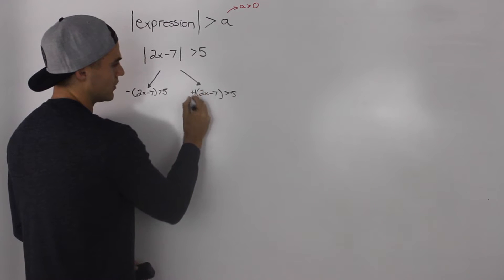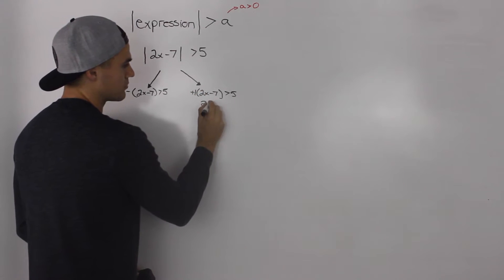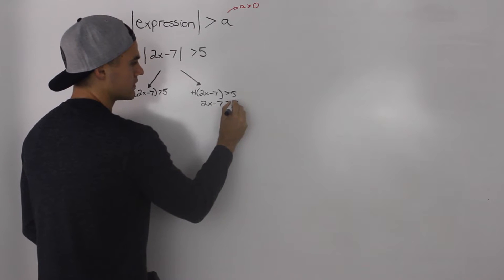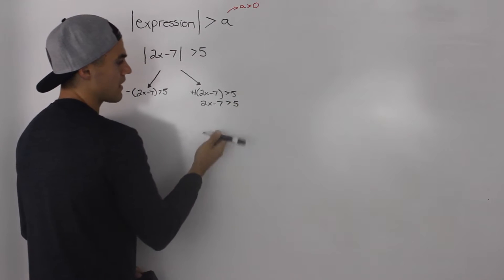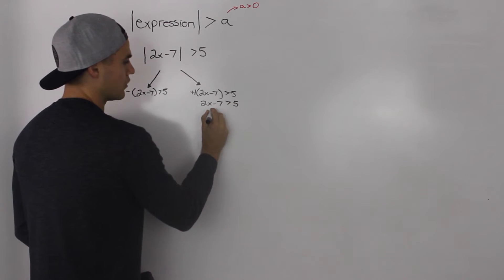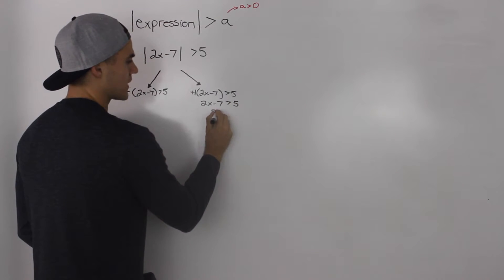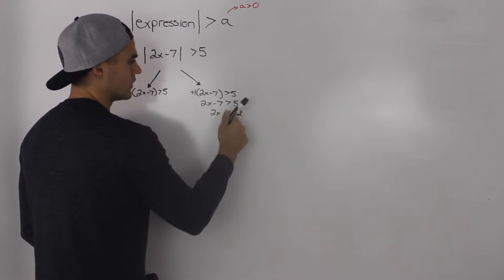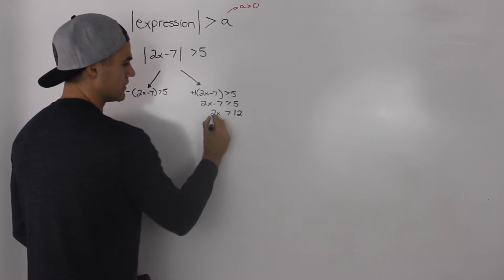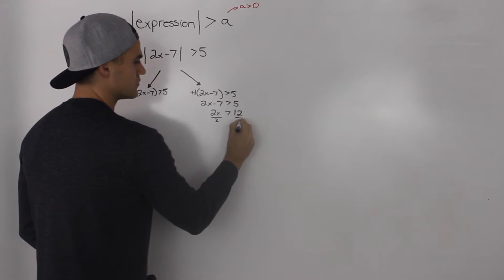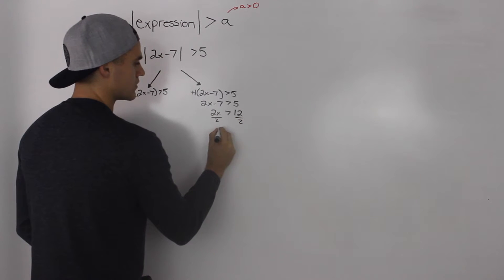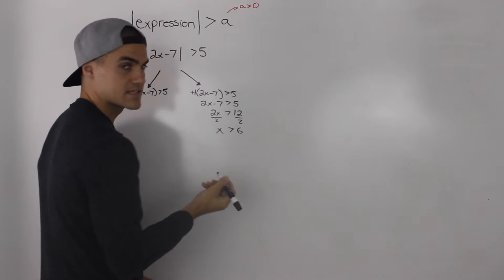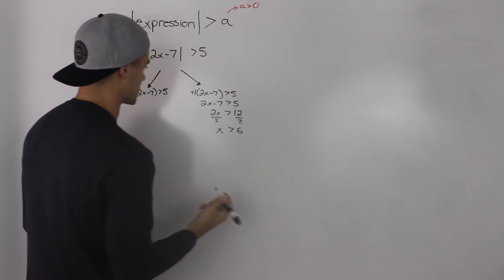For the positive case, everything stays the same: 2x minus 7 is greater than 5. Bring the negative 7 over, so 2x is greater than 12 — that's 5 plus 7. Divide both sides by 2. So when x is greater than 6, that's one of the solutions.